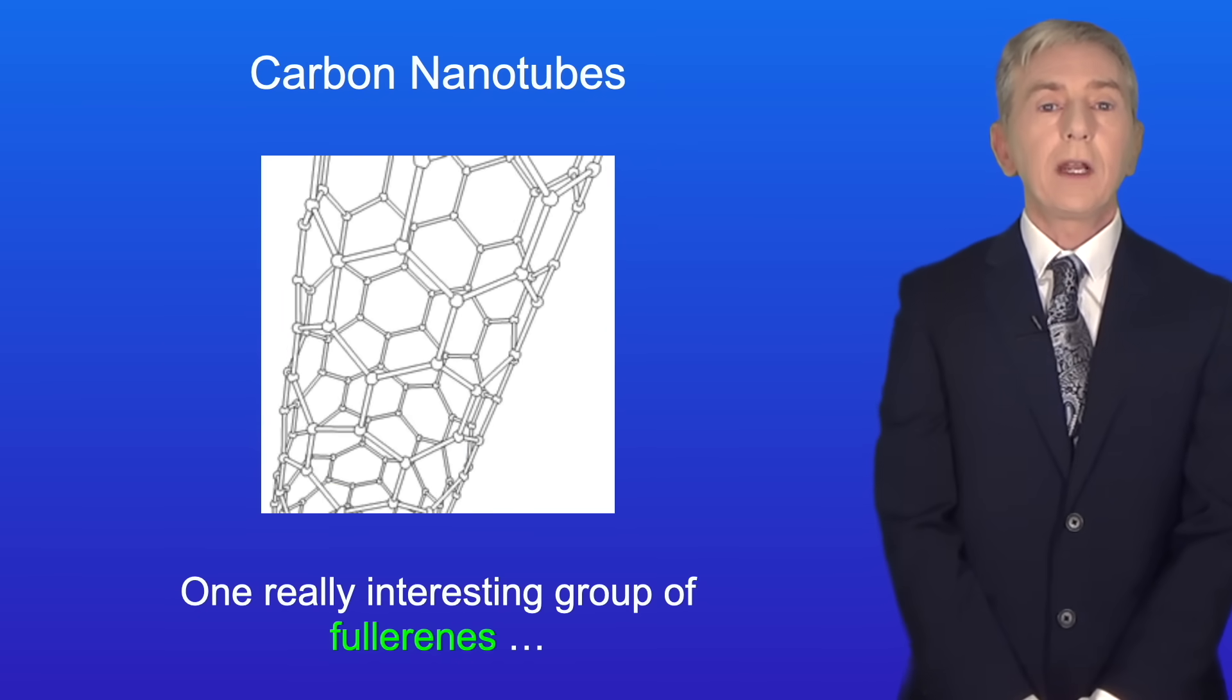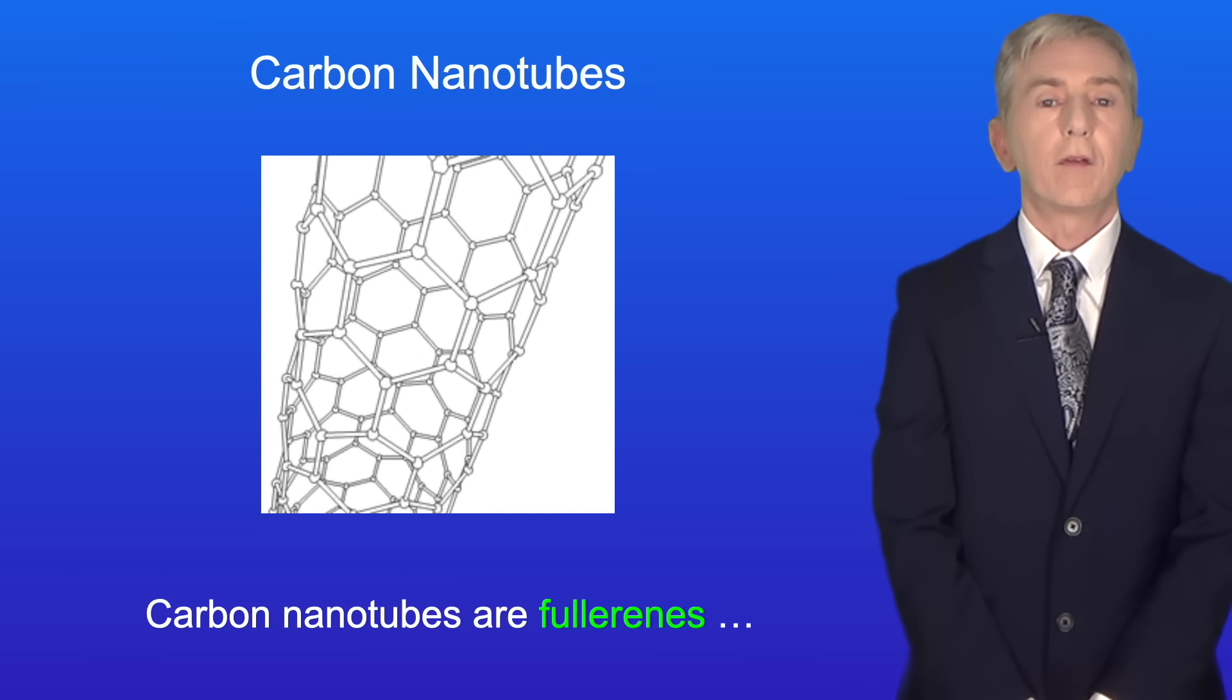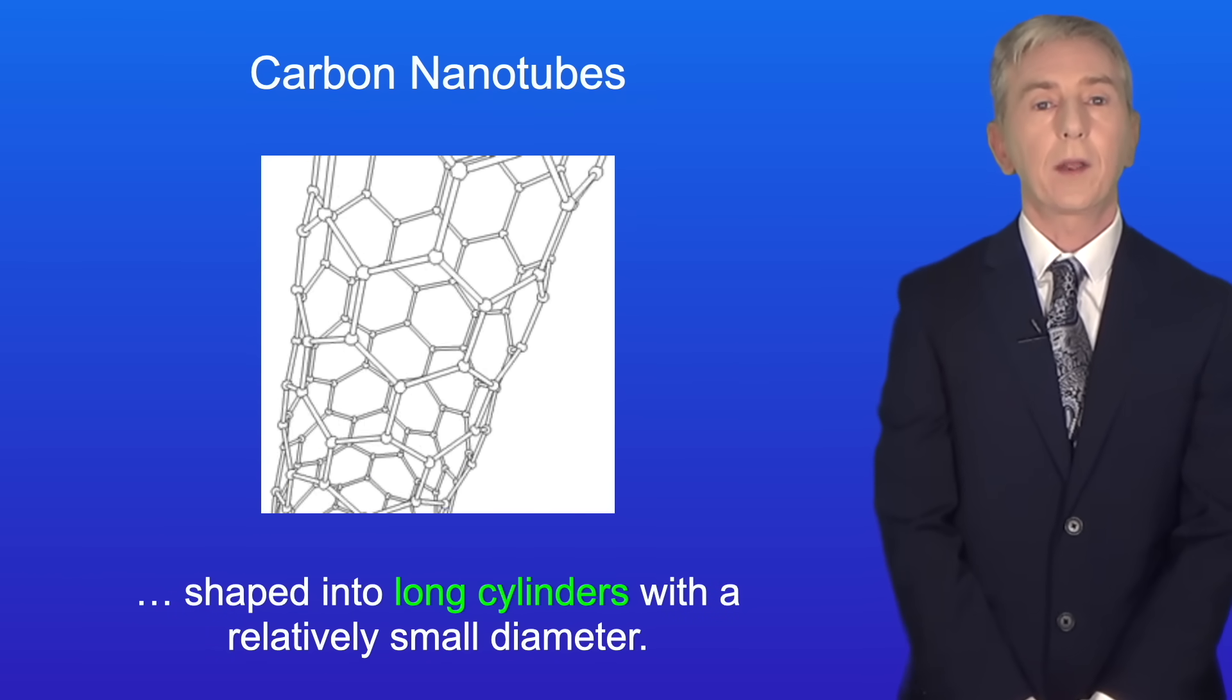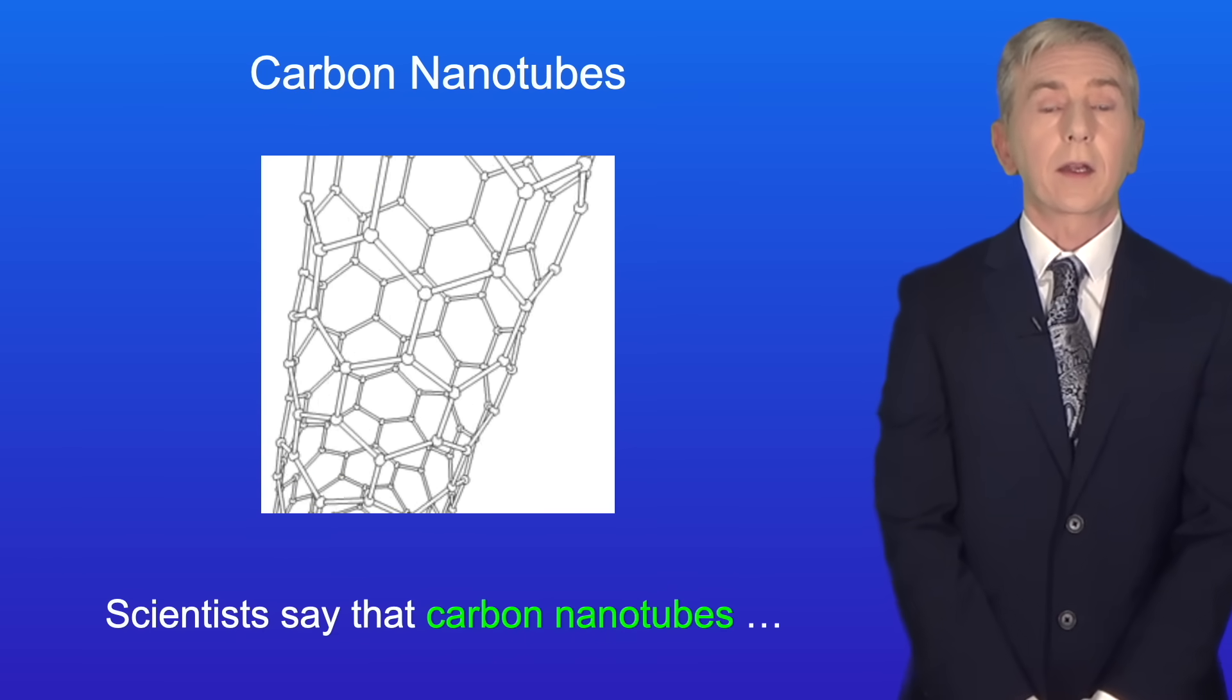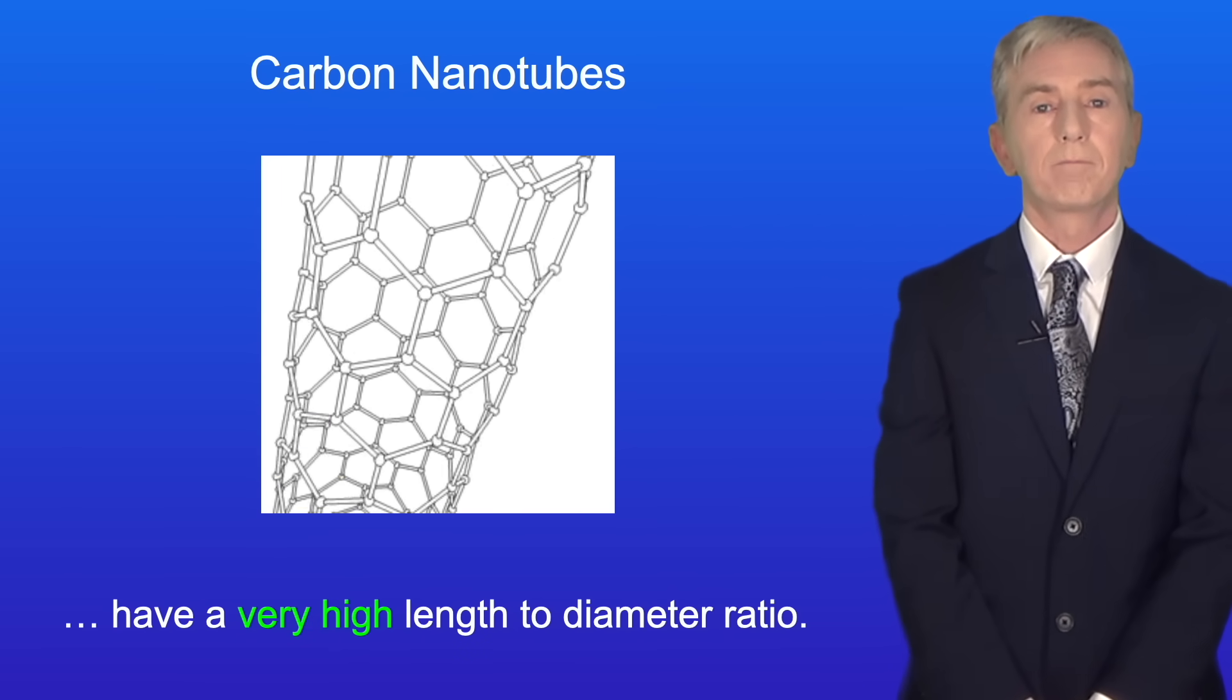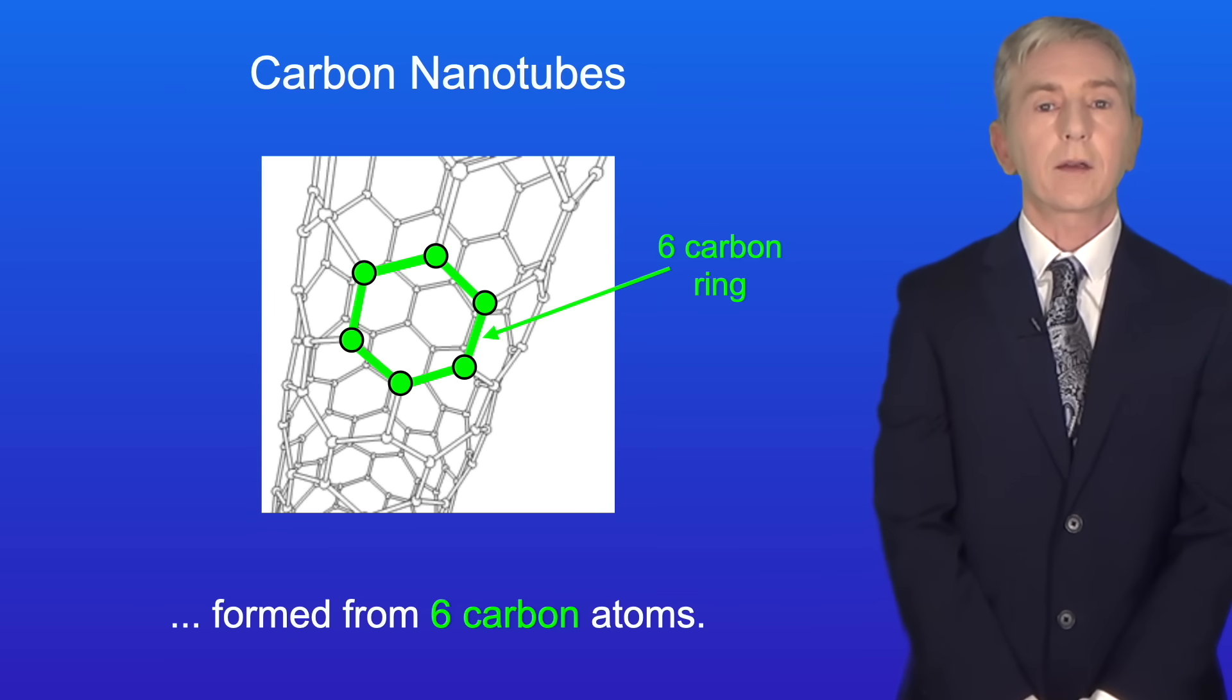Now one really interesting group of fullerenes are called carbon nanotubes. Carbon nanotubes are fullerenes shaped into long cylinders with a relatively small diameter. Scientists say that carbon nanotubes have a very high length to diameter ratio. Again, we can see that we have rings formed from six carbon atoms.